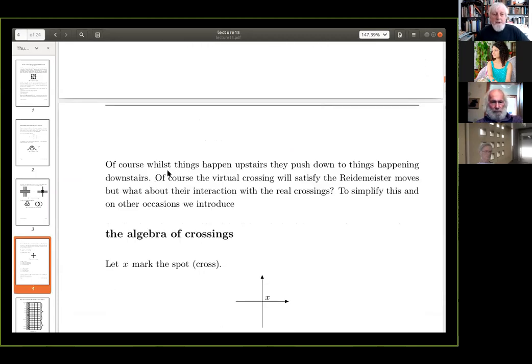So, it's got the two real crossings and a virtual crossing, which puts it onto a torus. And here's the virtual Hopf link. So, that is just represented by a meridian and a longitude, say, of the torus. So, they're both torus knots. Right. Of course, whilst things happen upstairs, they push down to things happening downstairs. The virtual crossings were all satisfied the Reidemeister moves. But what about their interaction with the real crossings?